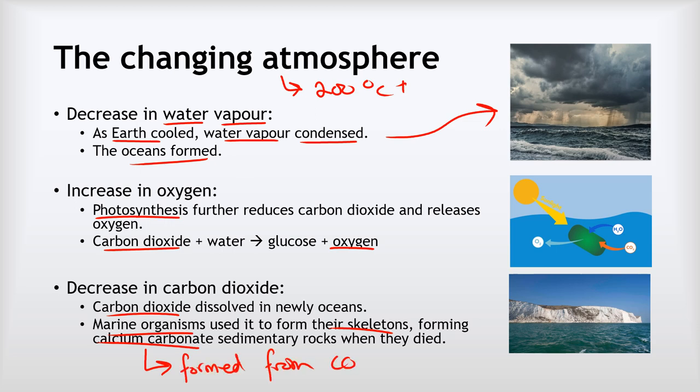Now when those creatures with their calcium carbonate skeletons die they sink to the bottom of the ocean, and over time their skeletons build up in great thick layers to form calcium carbonate rocks like you can see on the white cliffs of Dover there. And so that permanently locks the carbon dioxide away and keeps it out of the atmosphere, further decreasing the carbon dioxide concentration.